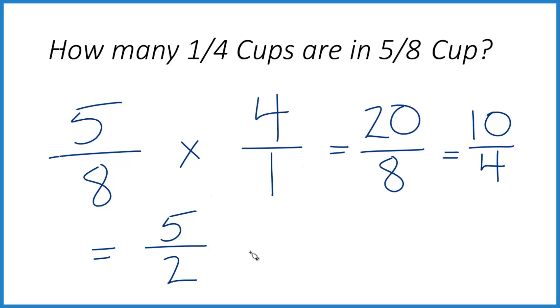If you want a mixed number, two goes into five two times. Two times two is four, with one left over. Keep the two across. That's equal to two and a half. So in answer to our question, there are two and a half of these one-fourth cup measures in five-eighths of a cup.